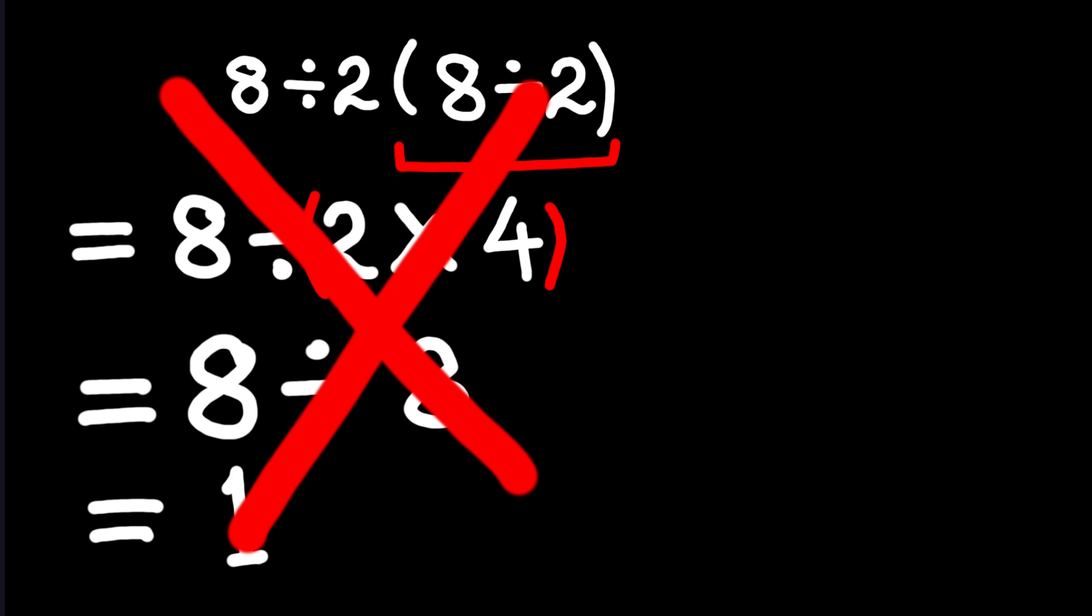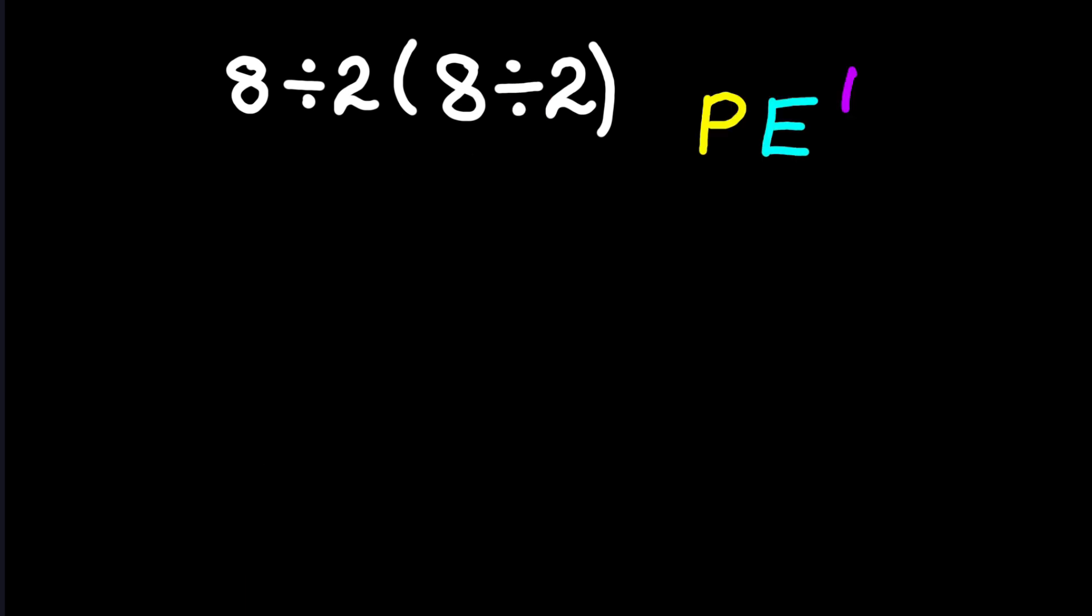Moving on, let's carefully use the order of operations, PEMDAS. Let's quickly recall. P stands for parentheses, E stands for exponents, M and D stand for multiplication and division, and here's the important part: they have equal priority, and we do them from left to right. Then finally, A and S stand for addition and subtraction, also left to right.